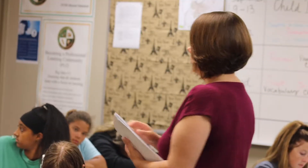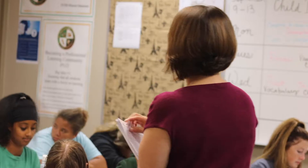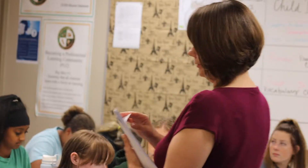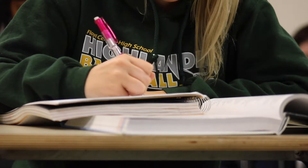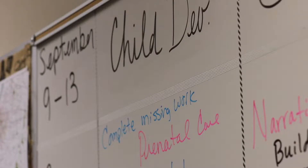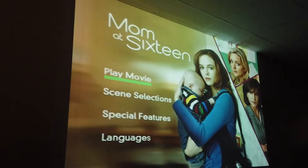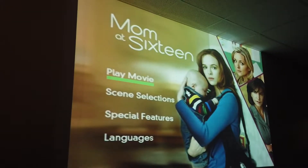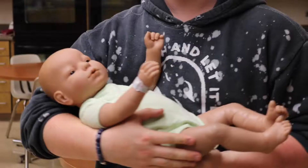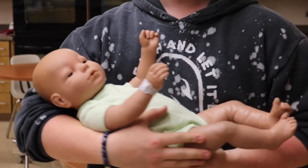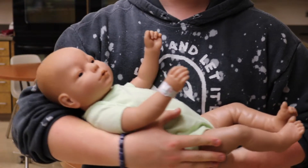The class itself is used to teach teenagers about new life and how to take care of it. The teacher, Mrs. Wobble, takes many different teaching approaches to teach the students about raising a kid, such as watching real-life reenactments, informational movies, hands-on learning, and even taking home an animatronic child.